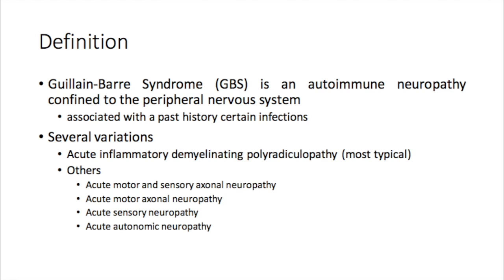There are several variations of this disease. It can present as acute inflammatory demyelinating polyradiculopathy, which is the most typical presentation, but there are other variants as well, such as acute motor and sensory axonal neuropathy, acute motor axonal neuropathy, acute sensory neuropathy, and also, interestingly, acute autonomic neuropathy.